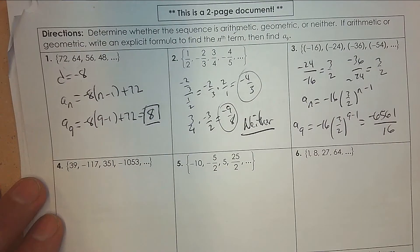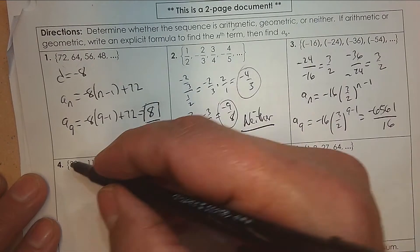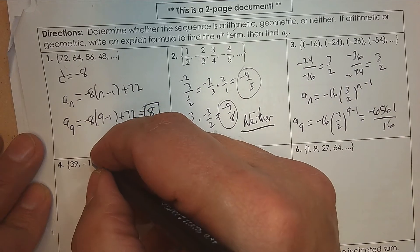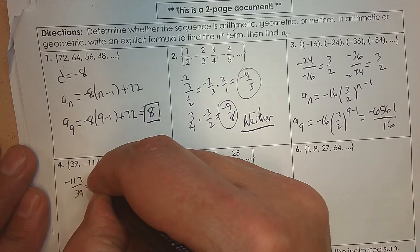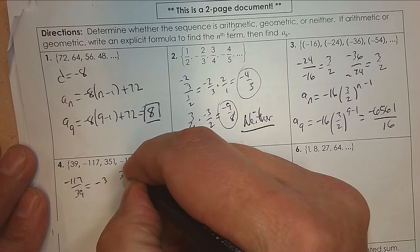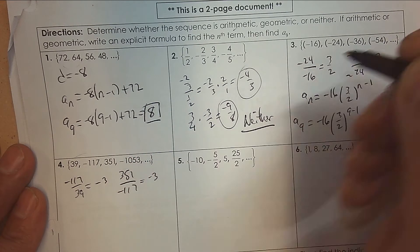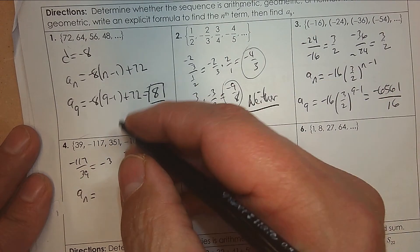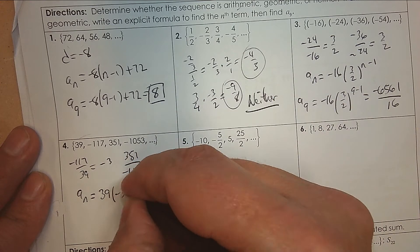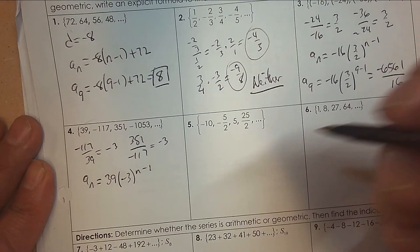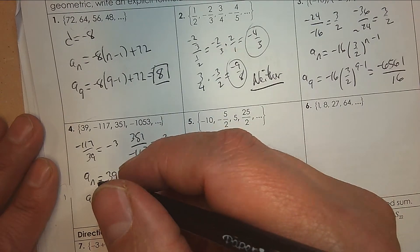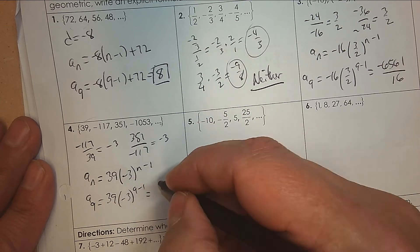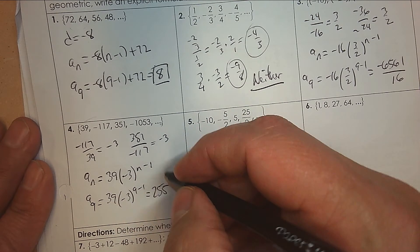Number four: it's alternating, so it can't be arithmetic. Is it geometric? Dividing negative one seventeen over thirty-nine, then three fifty-one over negative one seventeen — there's a common ratio of negative three. So the general rule would be thirty-nine times r, which is negative three, to the n minus one. To find the ninth term, just plug in nine. The answer is two hundred and fifty-five thousand eight hundred and seventy-nine.